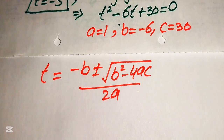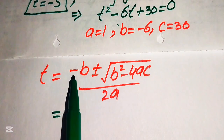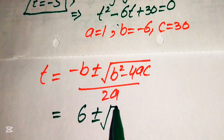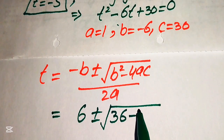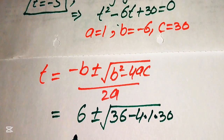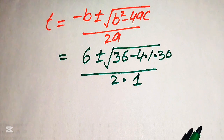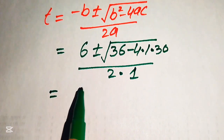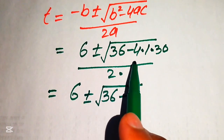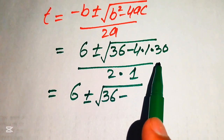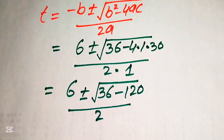Substituting the values: minus b becomes plus 6, and under the square root we have b squared equals 36, minus 4 times 1 times 30 equals 120, all divided by 2 times 1 equals 2. So t equals 6 plus or minus the square root of 36 minus 120, divided by 2.